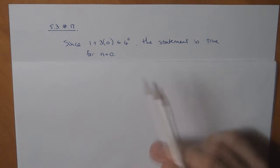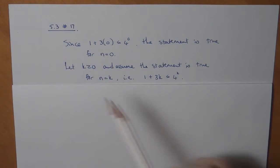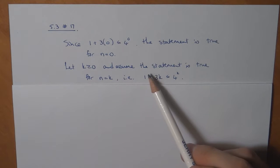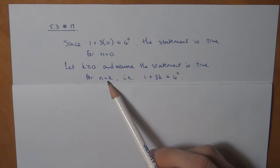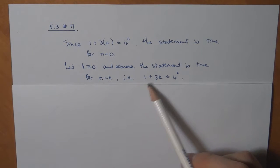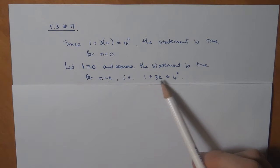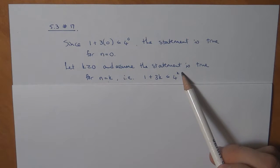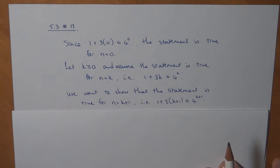Then let's take any k and assume that the statement is true for k. That is, I assume that 1 plus 3k is less than or equal to 4 to the k. We now want to show that the statement is true for k plus 1 as well.